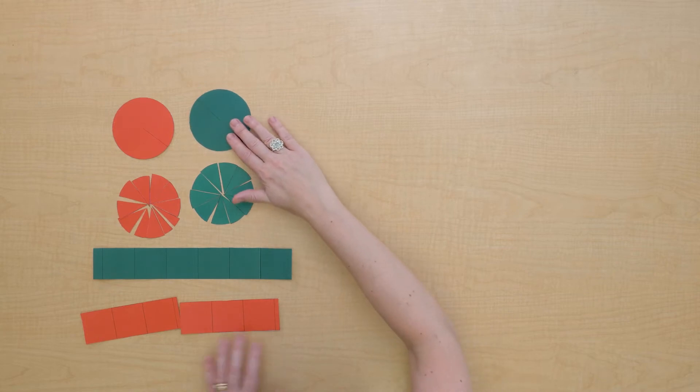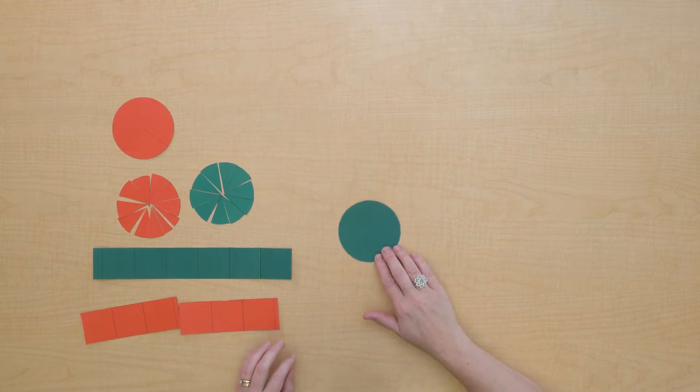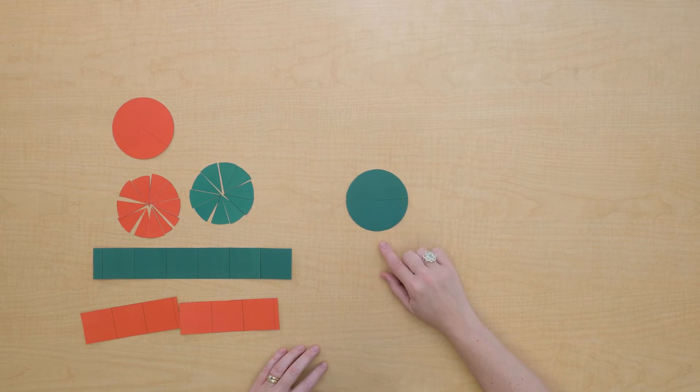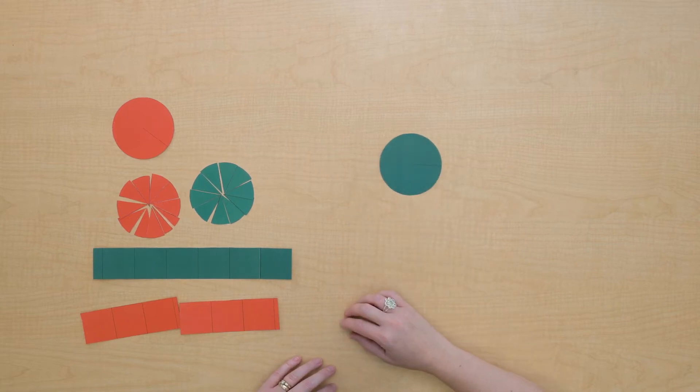Let's take a look at this green circle first. Let's suppose I wanted to find the area of this green circle. Now what have we done in the past to find the area? We've converted our shape into a rectangle.